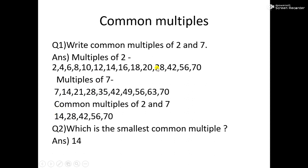Likewise, 28 is a common multiple of 2 and 7, so we write 28 also. Likewise 42, 56, 70 — all these numbers are common multiples of 2 and 7. Which is the smallest common multiple? We find out that the smallest common multiple of 2 and 7 is number 14.